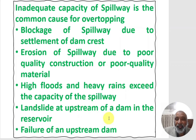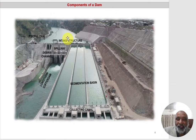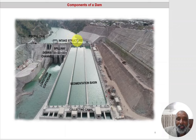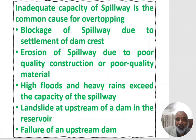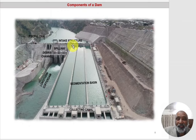A landslide upstream of the dam in the reservoir can block the passage of water, causing water to accumulate. At a certain limit, it will break the landslide and rush as a flood toward the dam, overtopping it and other downstream structures. Similarly, failure of an upstream dam — if another dam is located upstream and fails — will send all its accumulated water downstream, damaging the downstream dam and other structures in its path.